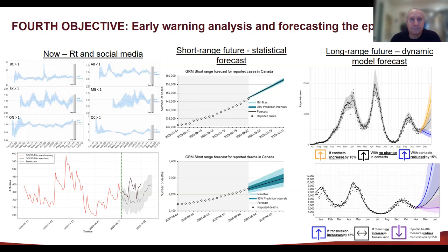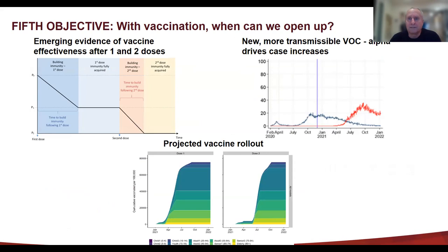The fifth objective was: with vaccination, when can we open up? This is the start of probably some of the most complex modeling, which includes having real information about the vaccines themselves. As it turns out, the vaccines are effective against transmission as well as against disease — which is just as well, because if they were just effective against disease we'd be in a much worse situation. We had to include the emergence of variants — initially alpha, then the delta variant — and also the projected vaccine rollout, updating month on month with not just what's projected but what has actually happened.